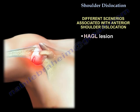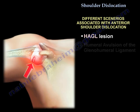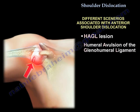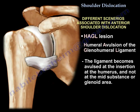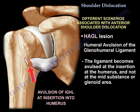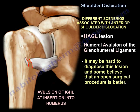Another scenario is the HAGL lesion, which is the humeral avulsion of the glenohumeral ligament. The ligaments get avulsed from the humerus — not mid-substance and not at the level of the glenoid. It may be hard to diagnose that lesion, and some people believe that open surgery is better.